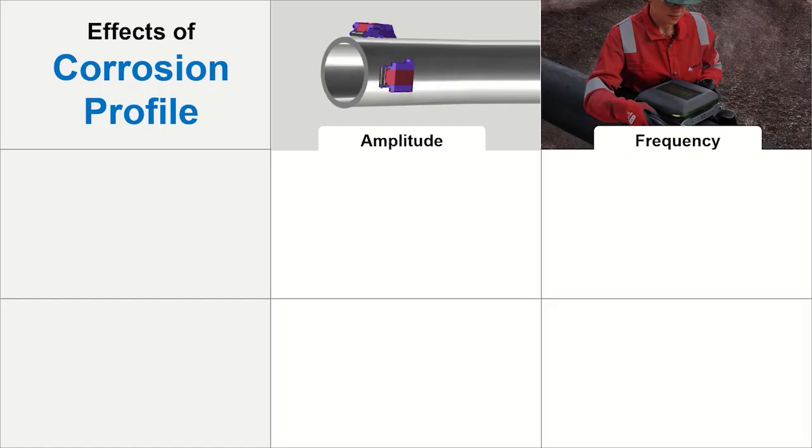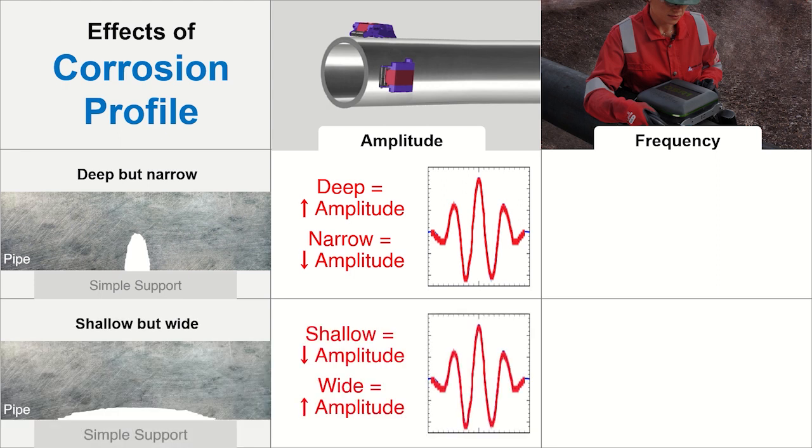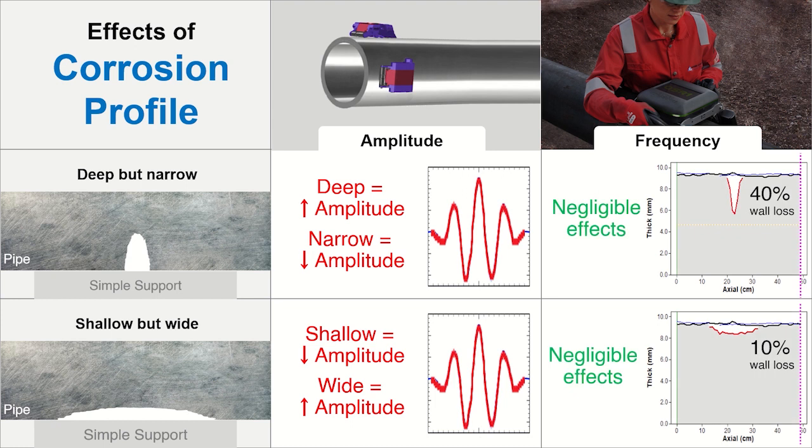For example, results from amplitude-based analysis are sensitive to corrosion profiles. A deep but narrow profile can yield the same amplitude measurement as a shallow but wide profile. GUL scanning can be used over a wide range of corrosion profiles to deliver both quantitative and accurate pipe wall thickness measurements.